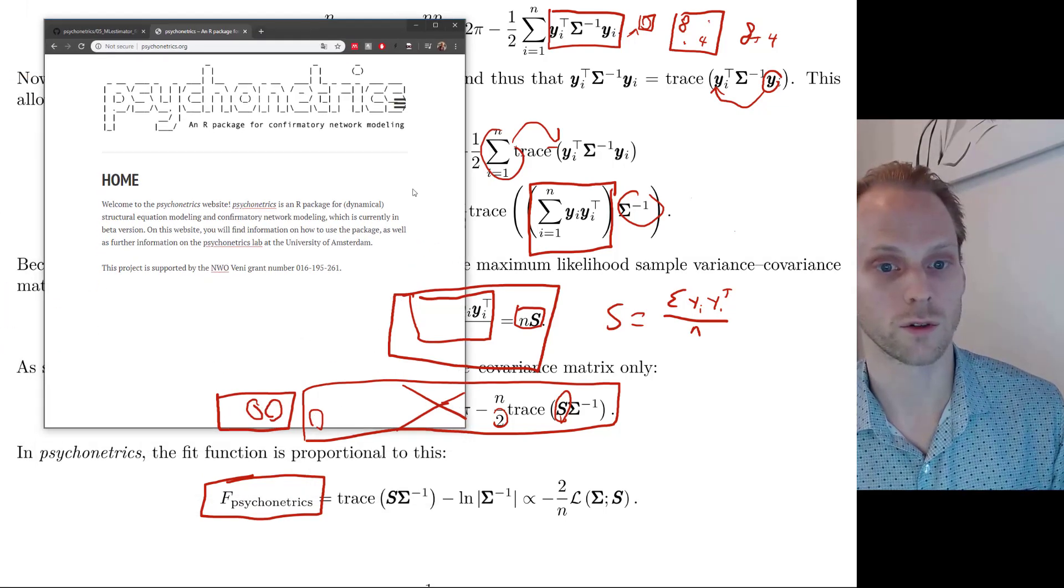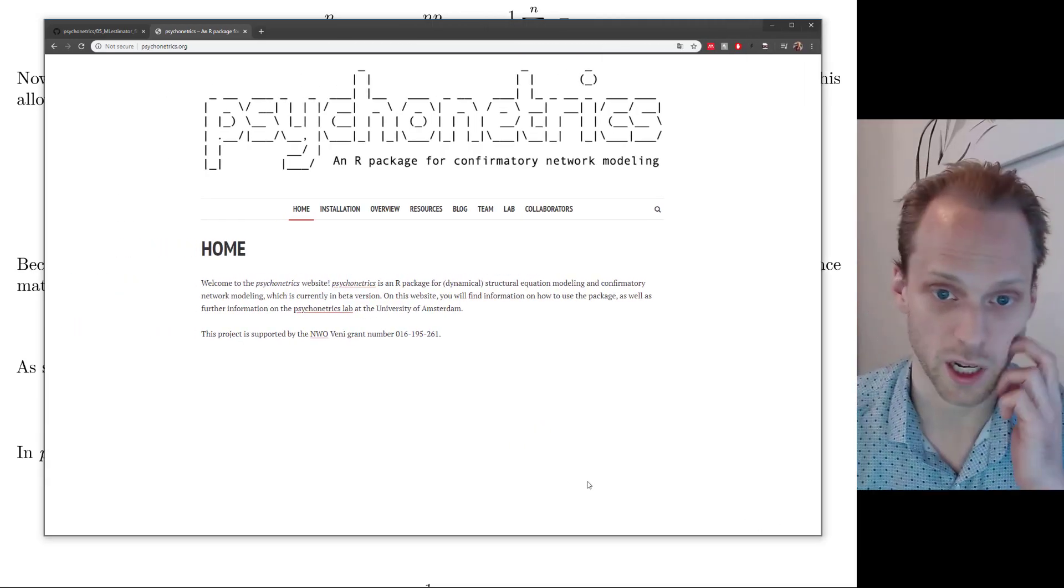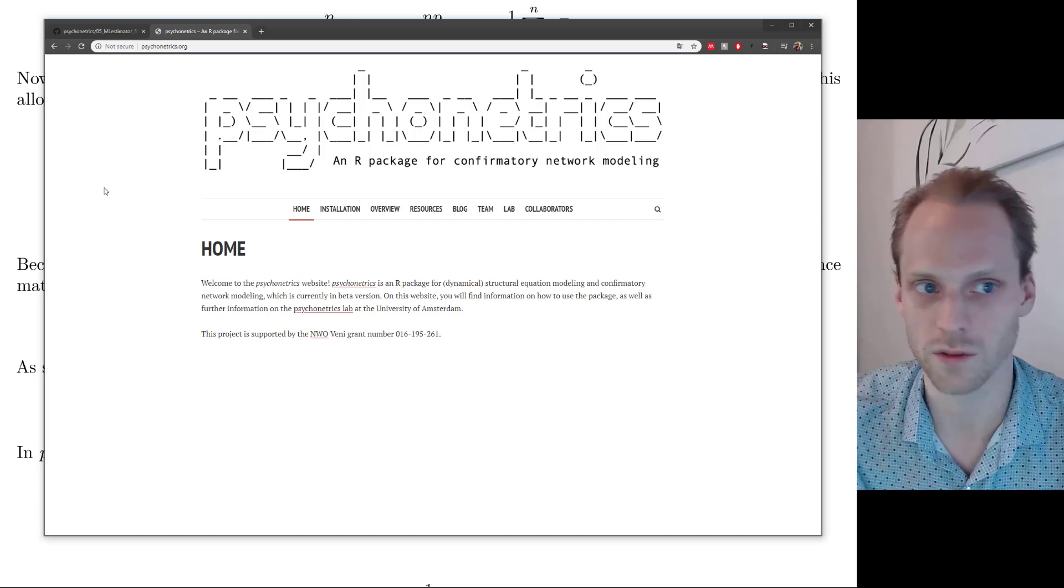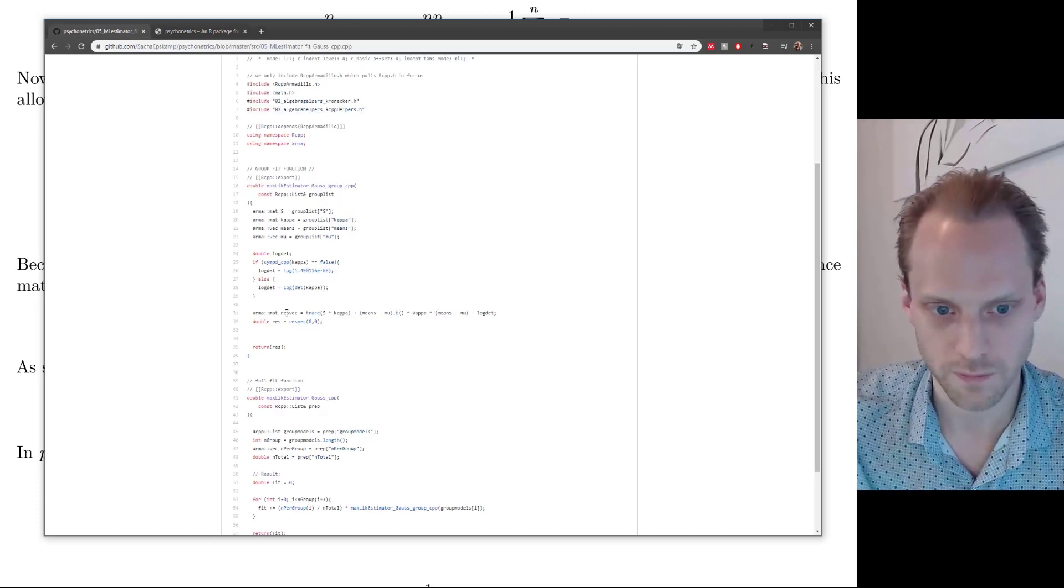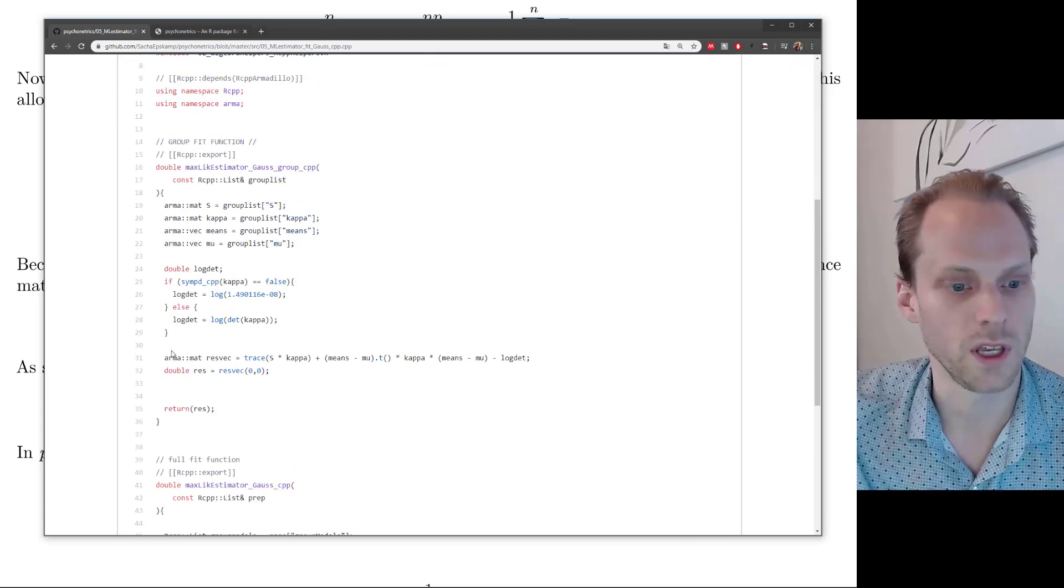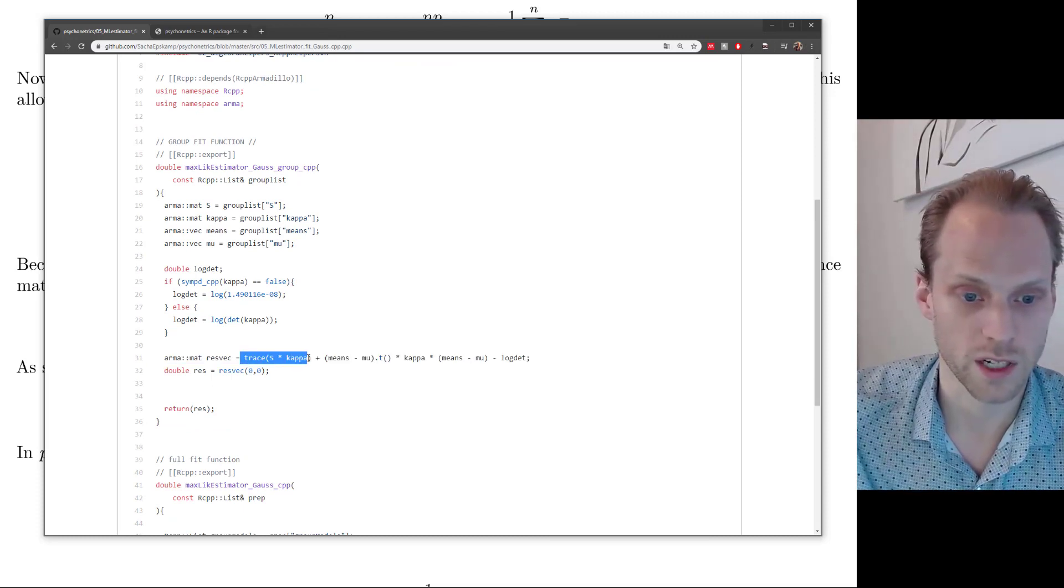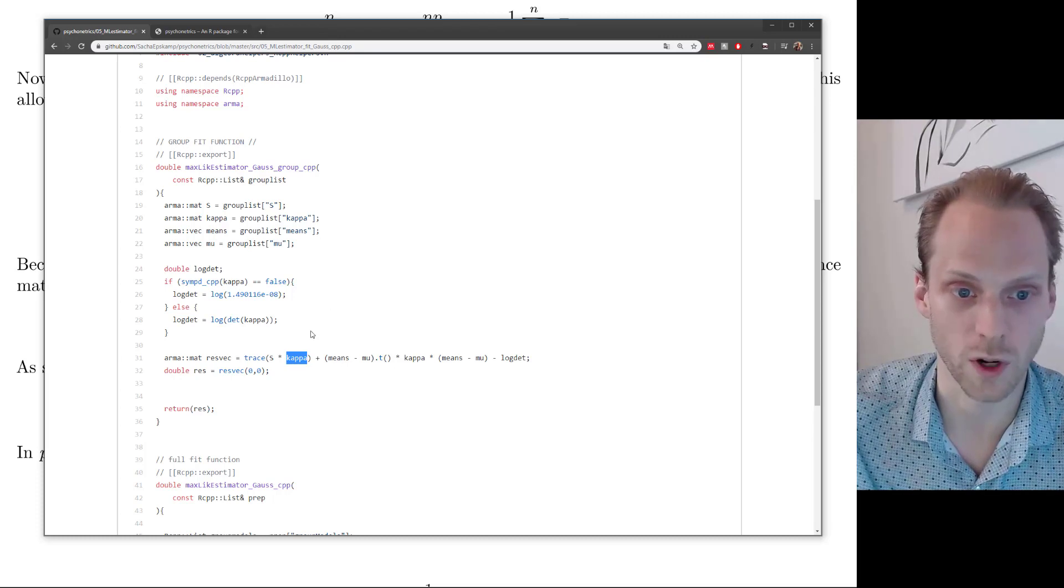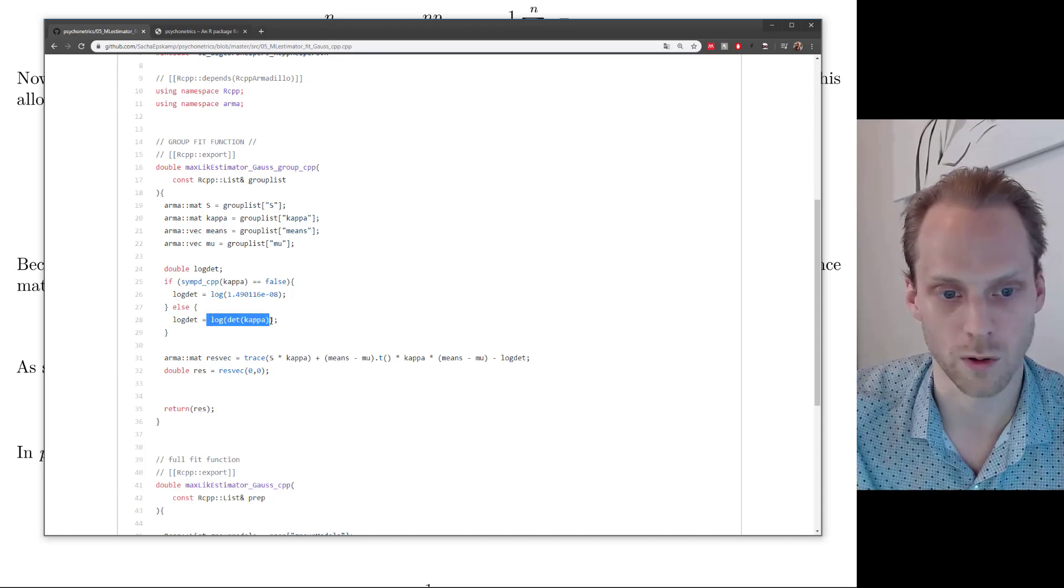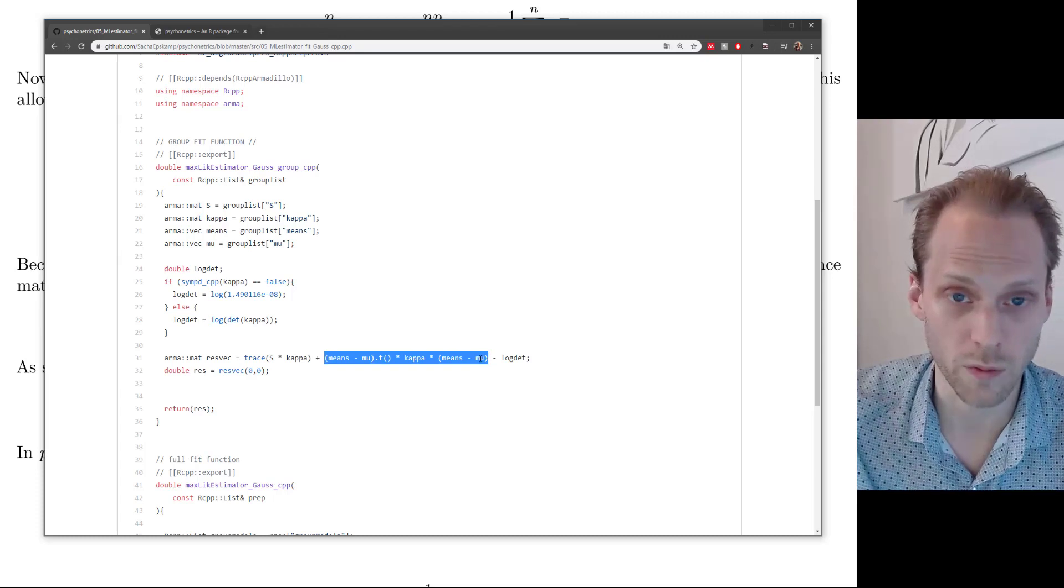And then we can get a fit function. So this is the fit function that I use in psychonetrics package, which is proportional to minus 2 over n times the log likelihood. And this 2, you always see this 2 when you optimize things. It's usually because this 2 is just always dropping out in statistics all the time anyway. So that's just useful to get rid of it. So this is minus 2 over n times the log likelihood, with this constant term removed. And then we're left with the trace of s, the observed variance covariance matrix, times the inverse variance covariance matrix, the modeled variance covariance matrix, minus the log determinant of the inverse modeled or implied variance covariance matrix. And this is exactly the function that I'm using in the psychonetrics package.